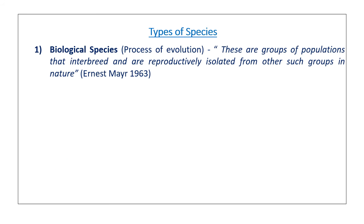Now the types of species. The first one is biological species — these are groups of populations that interbreed and are reproductively isolated from other such groups in nature.